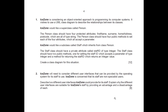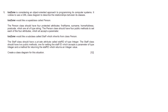Let's break this down and go through this exam question step by step. I like to make notes on the question to help guide me through, and it also helps me double check at the end that I've achieved everything being asked of me. Ice Zone is considering an object oriented approach to programming its computer systems. Already I'm thinking about classes, attributes, and methods. It wishes to use a UML diagram to describe the relationship between the classes, and Ice Zone would like a superclass called Person.